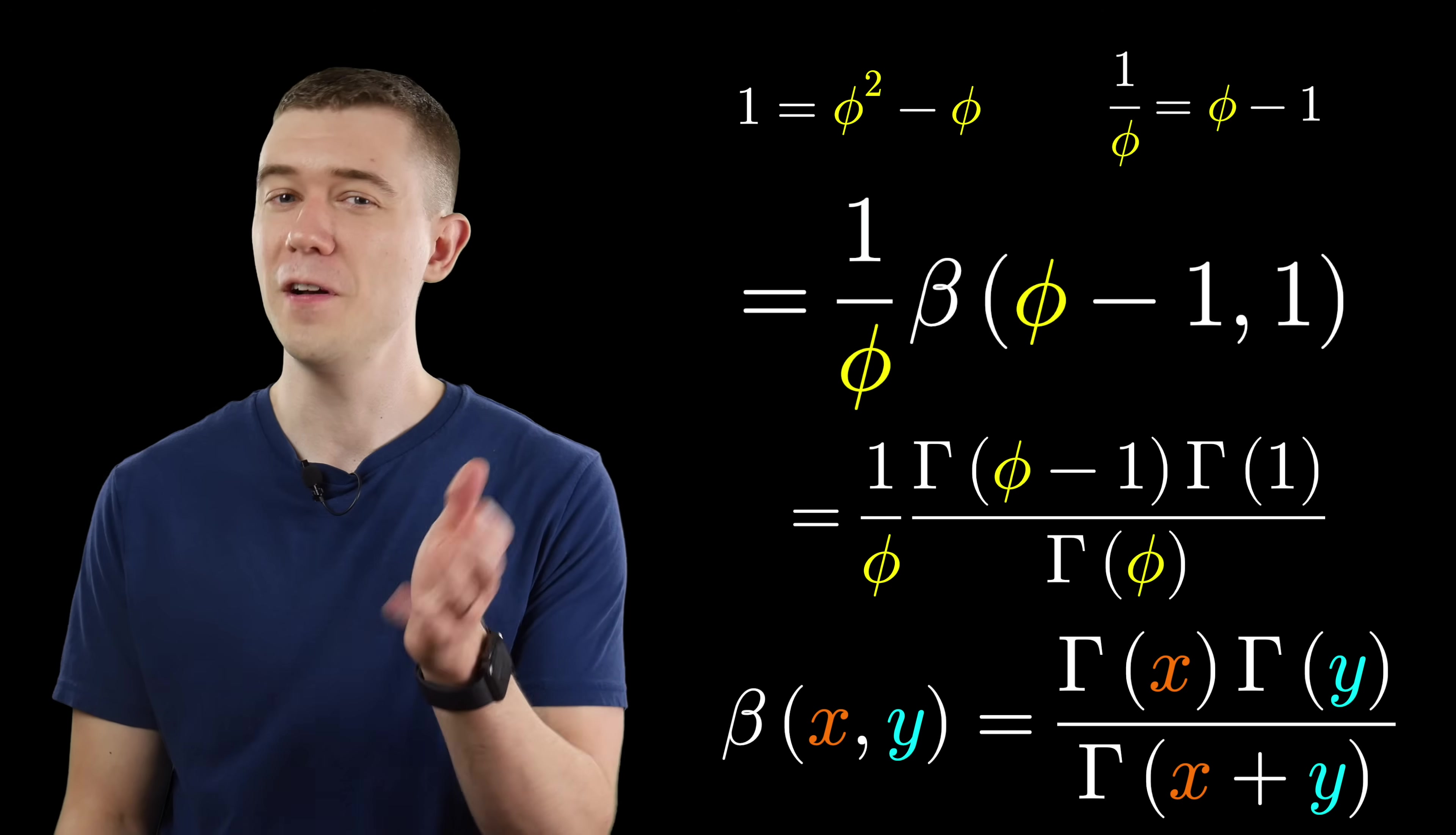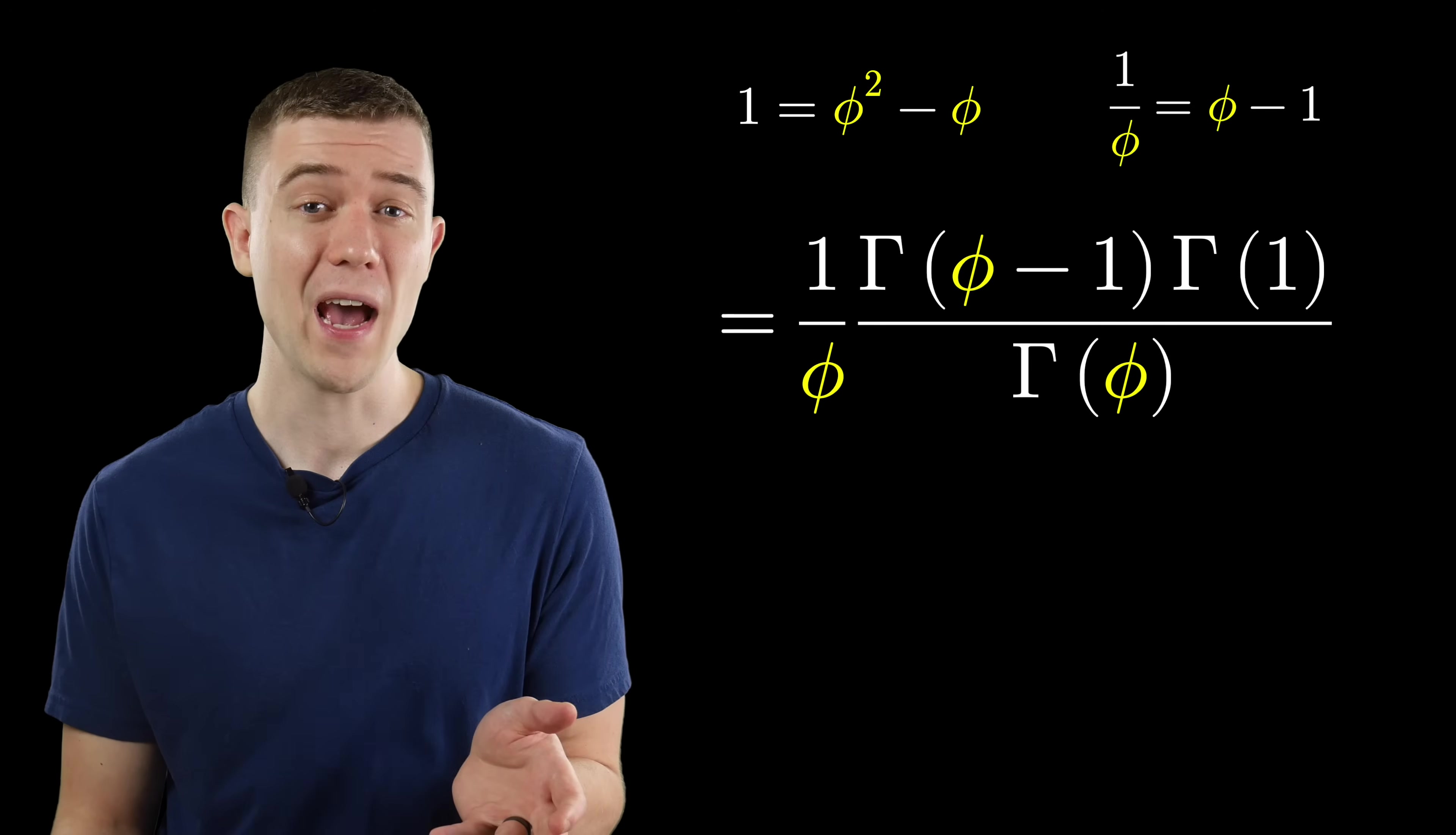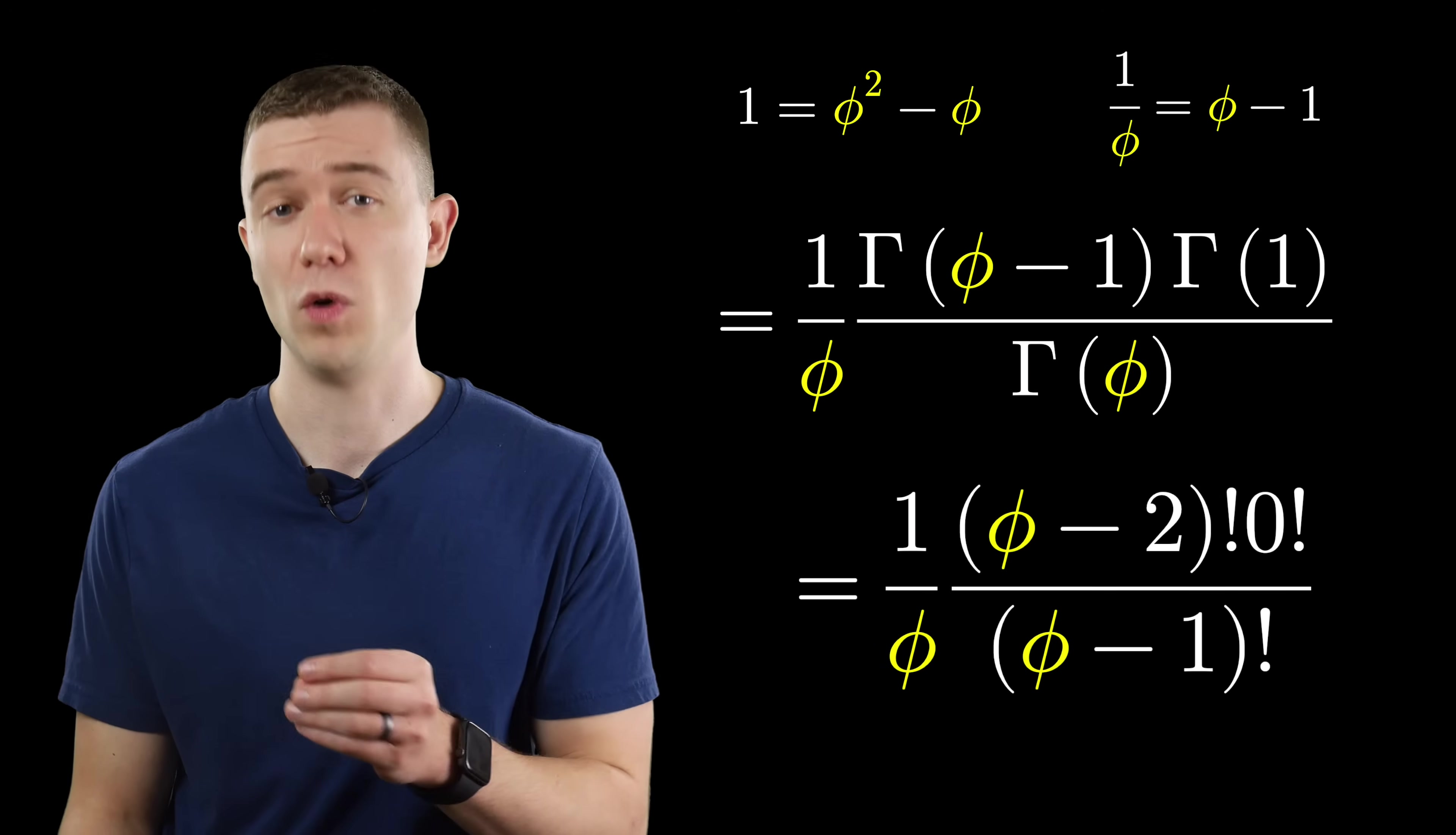The gamma function is the generalized factorial function. Gamma X is X minus 1 factorial. Thus we have phi minus 2 factorial, 0 factorial, which is 1, and phi minus 1 factorial.